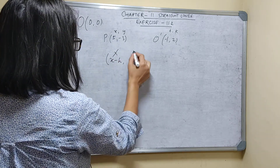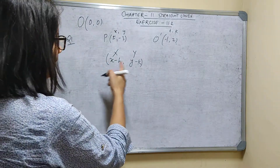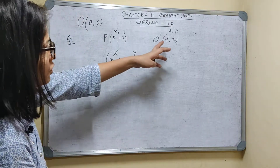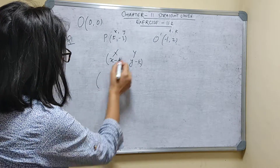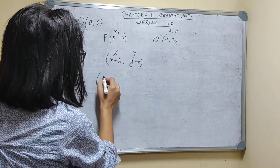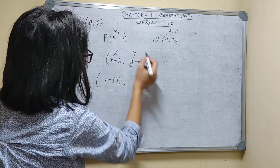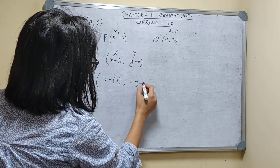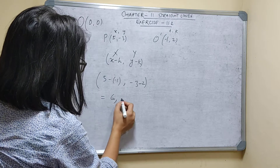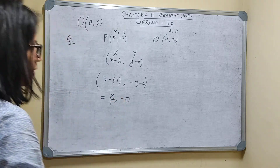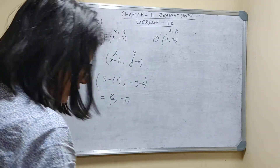That is called capital X and capital Y, with respect to this new origin. So it will be X minus H = 5 minus (-1), comma Y minus K = -3 minus 2. So 5 plus 1 = 6, and -3 minus 2 = -5. So (6, -5) are the new coordinates.